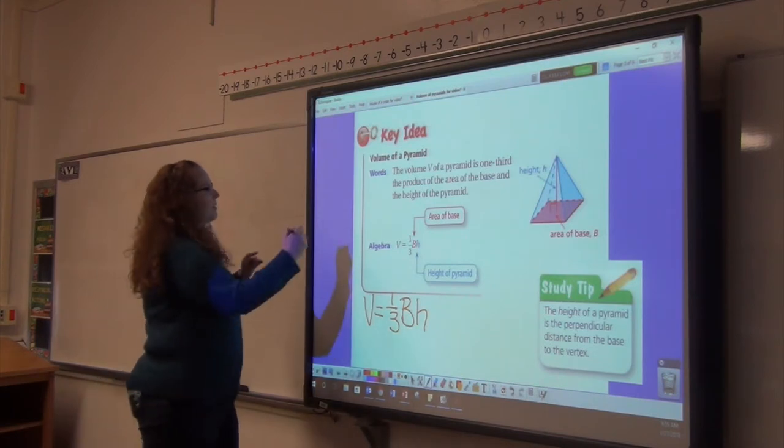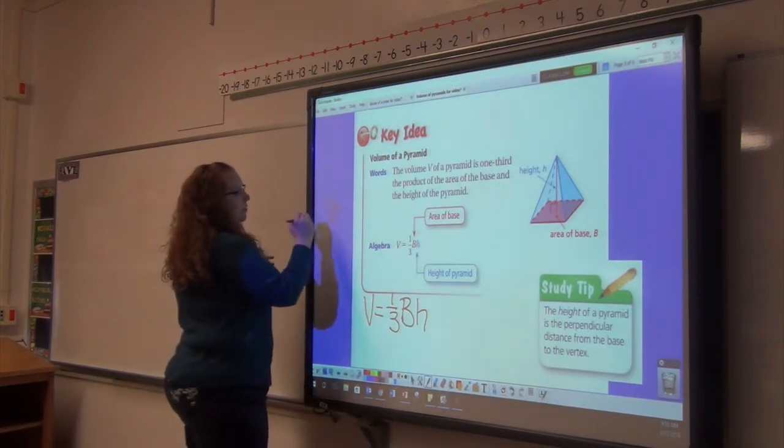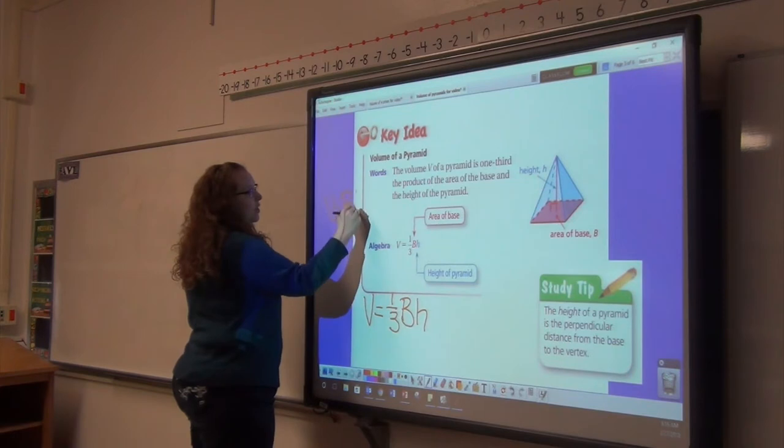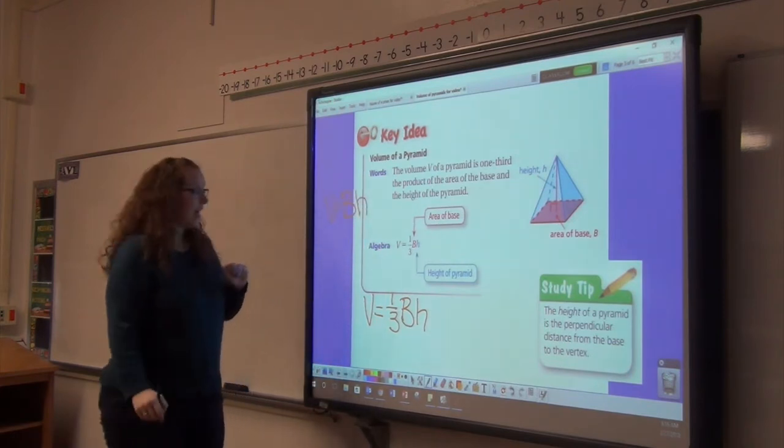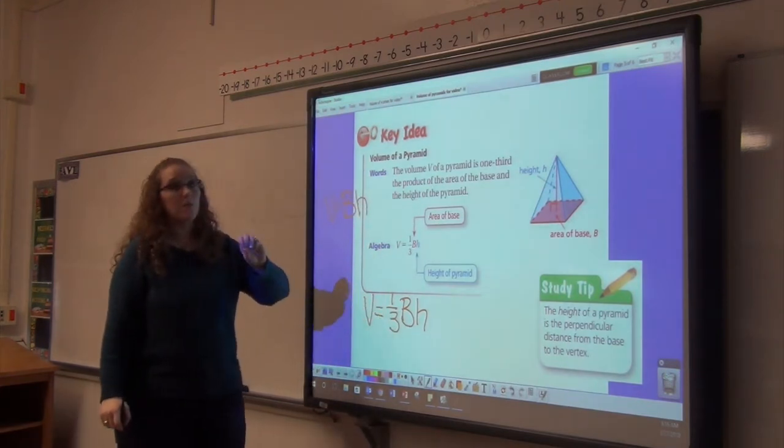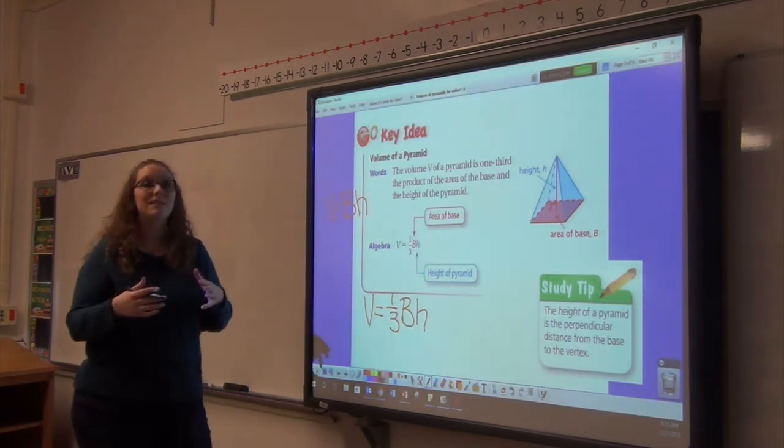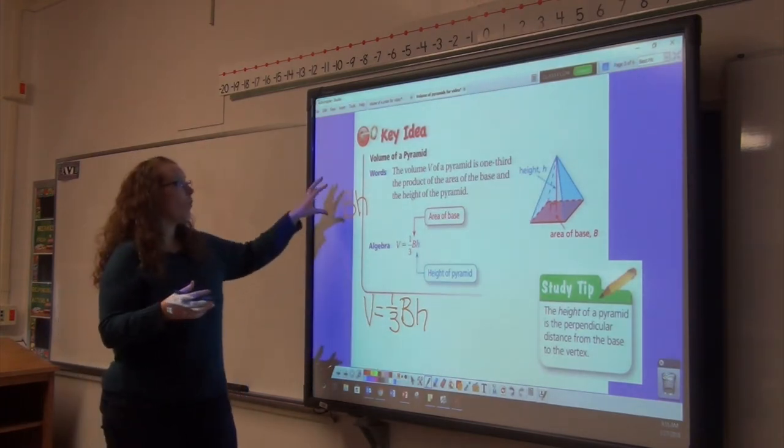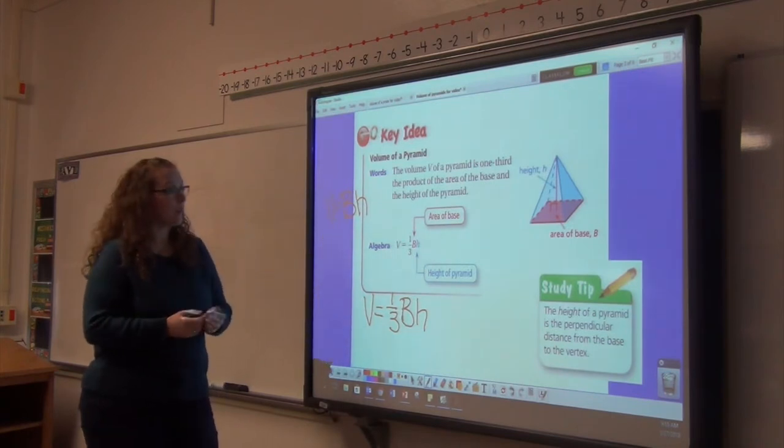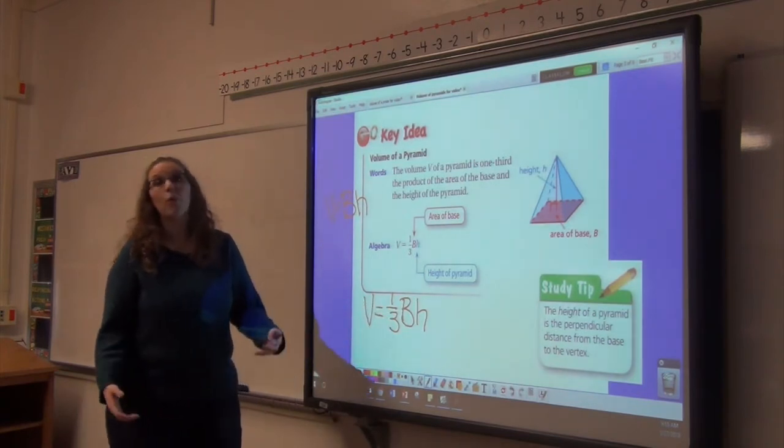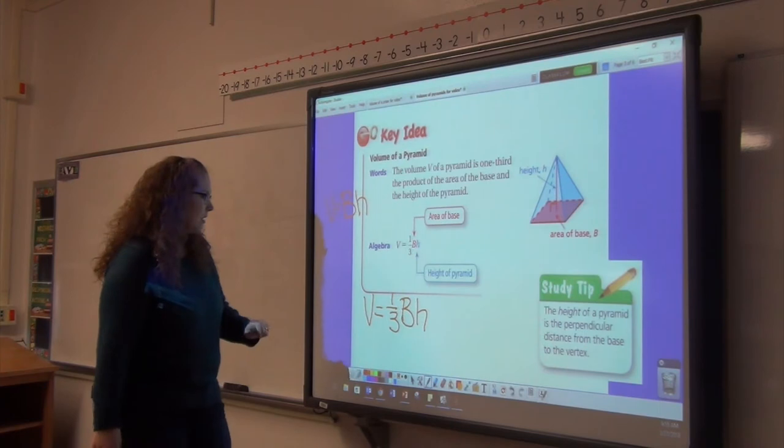The formula for a prism was volume equals area of the base times height. The volume of a pyramid is one third of that because three pyramids can fit together to form one prism. So we multiply by one third or divide by three.